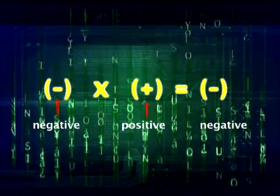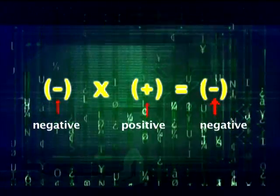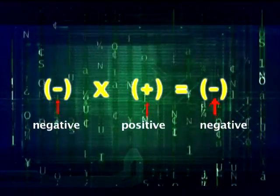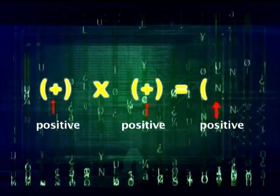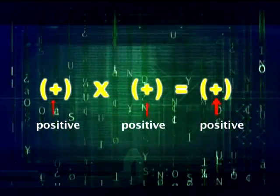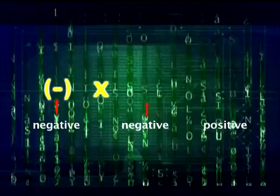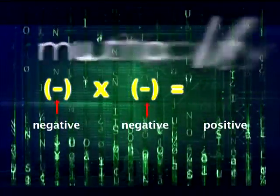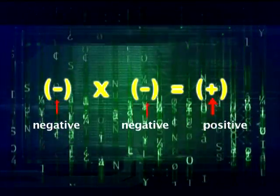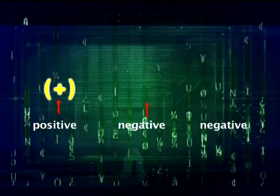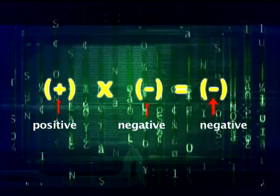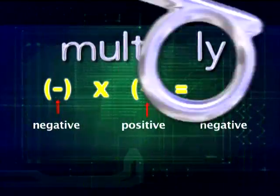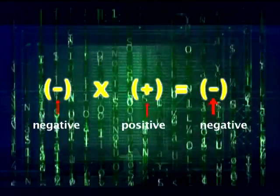Negative times positive, multiply and keep the negative line. Positive times positive is positive. Negative times negative is positive. Positive times negative is negative. Negative times positive is negative.